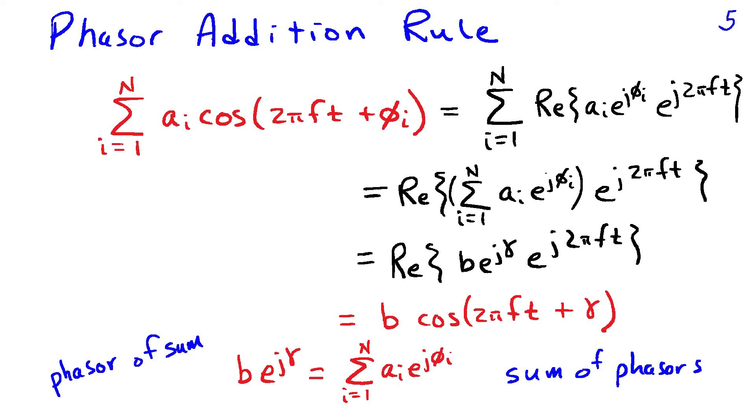Now this phasor addition rule applies to the sum of an arbitrary number of sinusoids. I've written that down on this slide here. The parts in red are what you can pay attention to. The parts in black are showing the steps are the same as with two sinusoids, taking the sum of the real parts as being the real part of the sum.